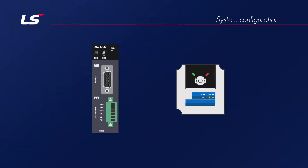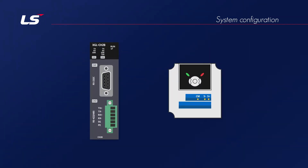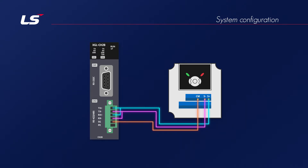RS-485 wiring between PLC and drive is as follows: connect TRX plus of PLC to S plus of drive, TRX minus of PLC to S minus of drive, and SG of PLC to CM of drive, respectively.